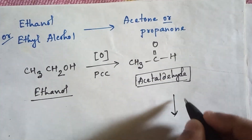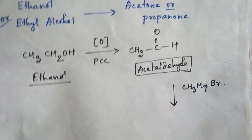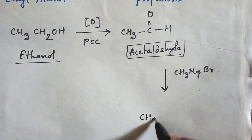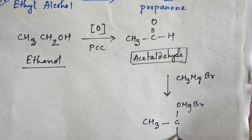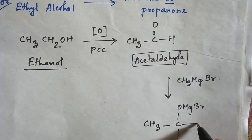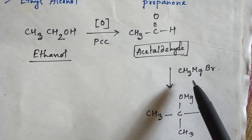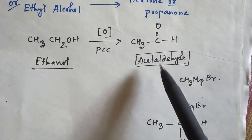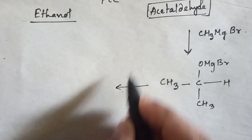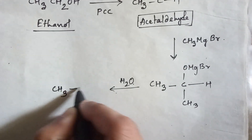Now if you use a Grignard reagent, then you will get CH3. The Grignard reagent is CH3MgBr. The MgBr portion will add with the oxygen and CH3 will add with the carbon atom. Now if you do hydrolysis then you will get a 2° alcohol.